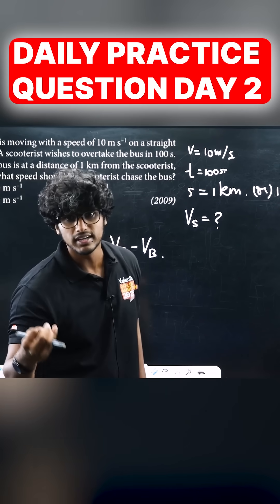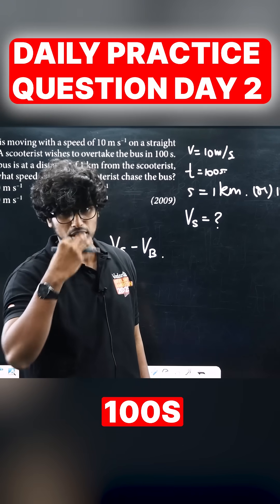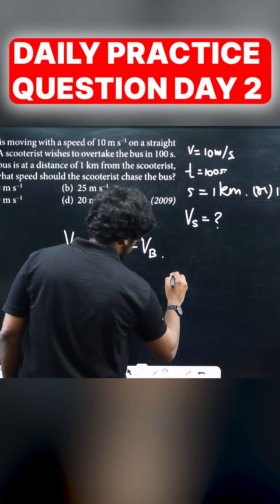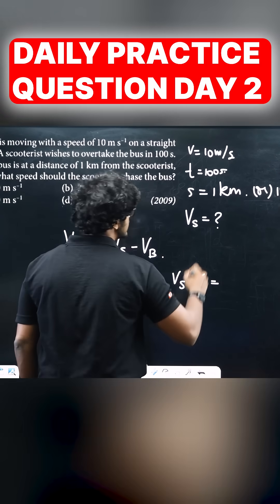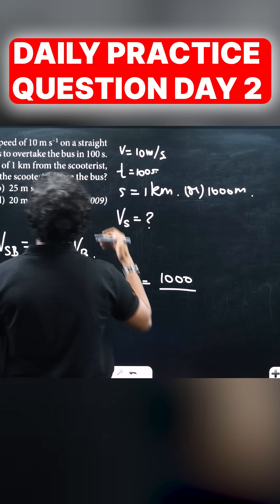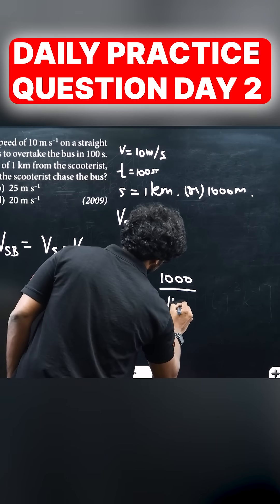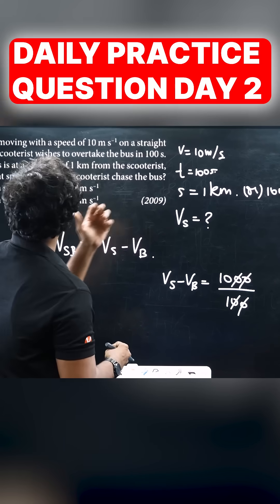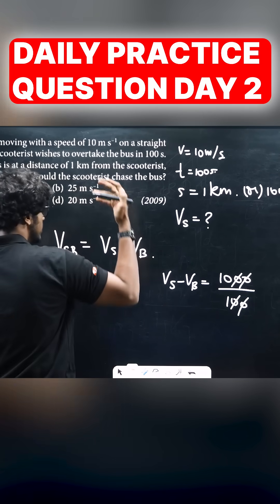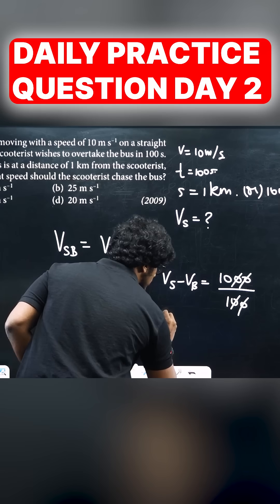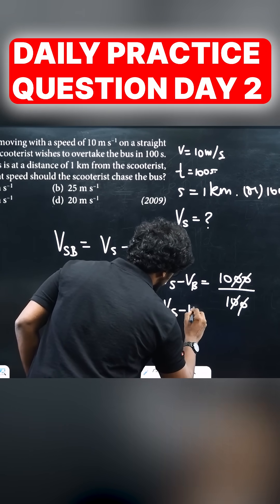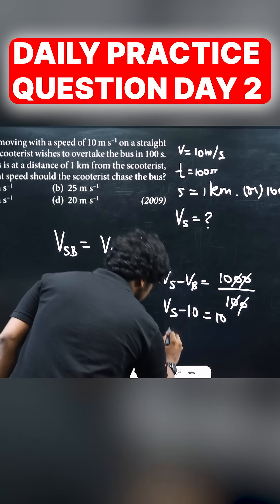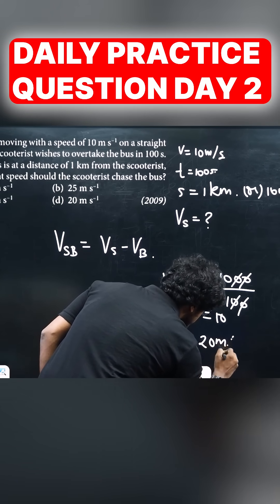Using the distance of 1000 meters and time of 100 seconds: speed equals distance divided by time, which is 1000 divided by 100, giving 10 meters per second. So Vs minus Vb equals 10 meters per second, meaning Vs minus 10 equals 10, therefore the velocity of the scooter equals 20 meters per second.